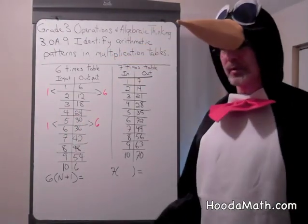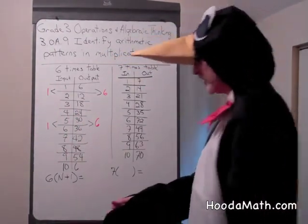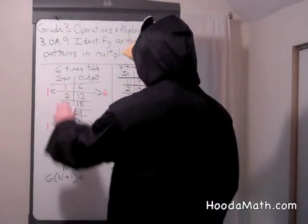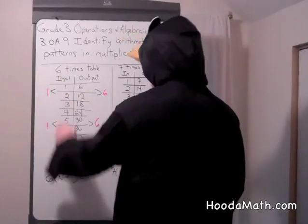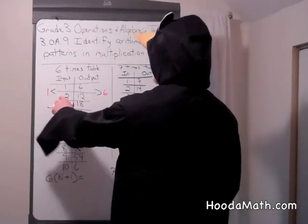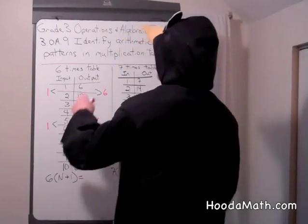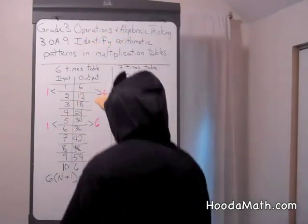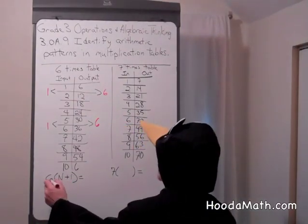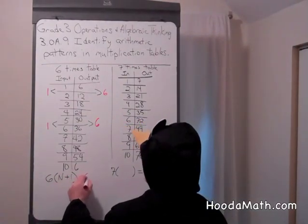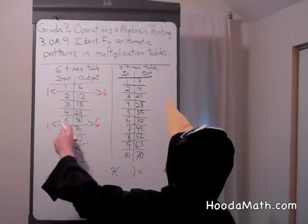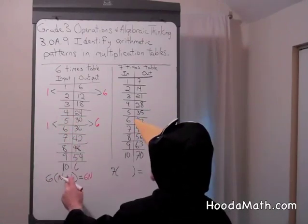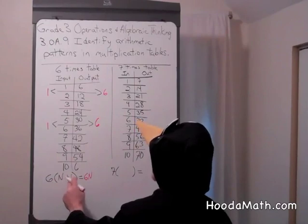Now, in general, we can write this using the distributive property. N being the number that we had. And the next number, you add one to get the input. And then multiply that by six, because it's the six times table. And what we will find is if we use the distributive property, six times N equals six N. Or, in this case, six times five is 30. And then six times one is six.